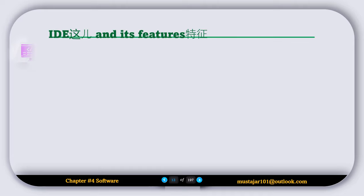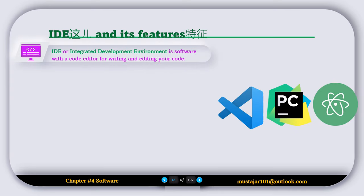An Integrated Development Environment, or IDE, is software that combines tools like a code editor, auto-completion, auto-correction, pretty prints, and block minimizing to make coding easier. Let's dive deeper into each feature to see how they enhance the coding experience.